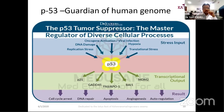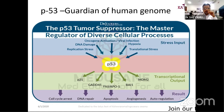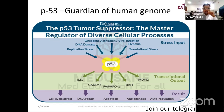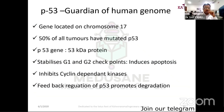p53 can be a large essay question but at the undergraduate level it is mostly a short-notes question. p53 is affected by replication stress, DNA damage, oncogene activation, viral infections, hypoxia, and translational stress. These stresses cause p53 to express different proteins such as p21 and GADD. Outcomes include cell cycle arrest, DNA repair, apoptosis, angiogenesis, or autoregulation. Improper p53 function leads to carcinogenesis via proteins such as MDM2 and BI1.